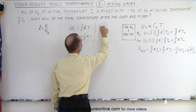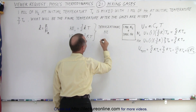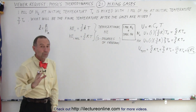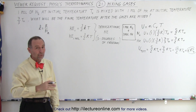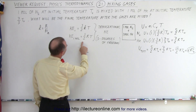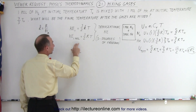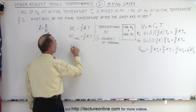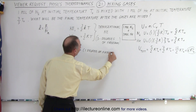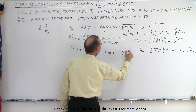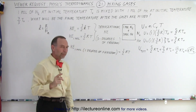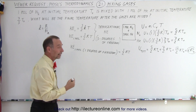For translational kinetic energy, there are three degrees of freedom, meaning the molecule can move in the x, y, and z directions. For each degree of freedom it has 1/2 RT, so the kinetic energy for one mole for one degree of freedom is 1/2 RT. Since there are three degrees of freedom, we multiply by three to get 3/2 RT. But that's only if we take into account translational kinetic energy.